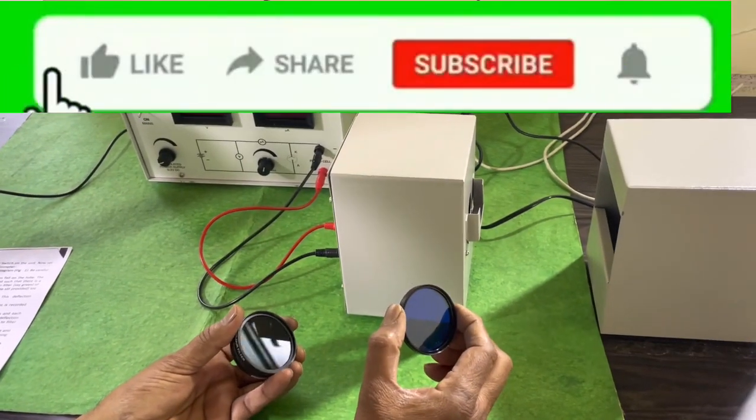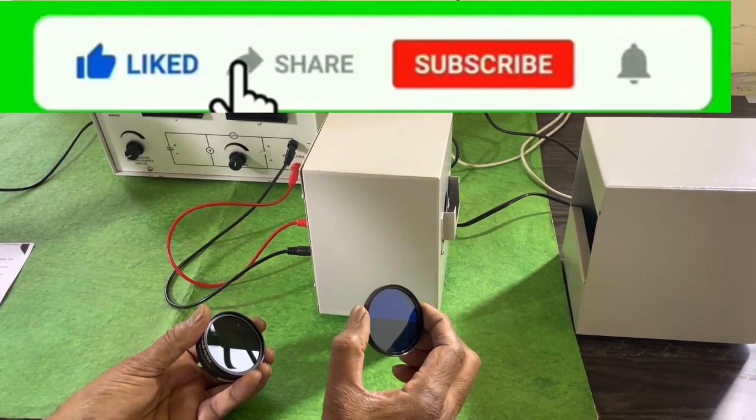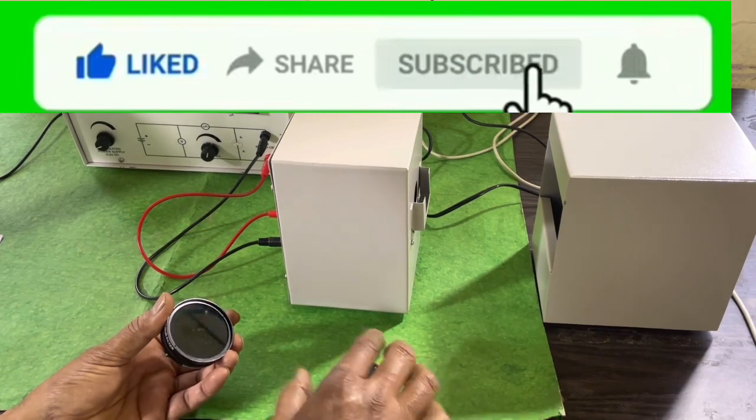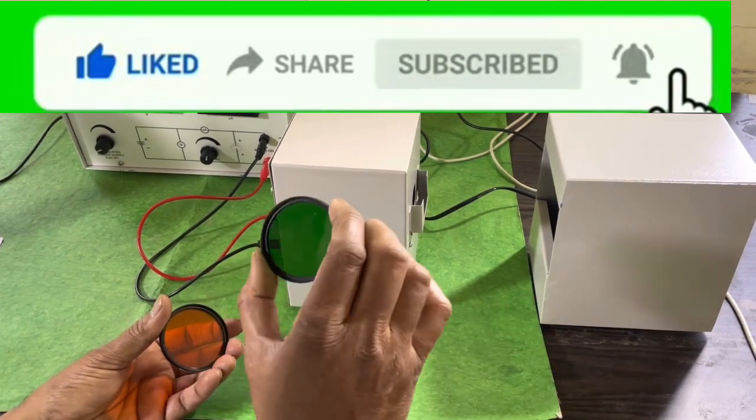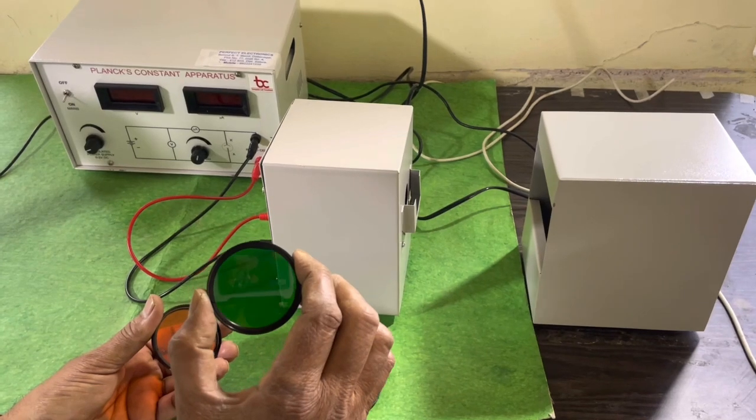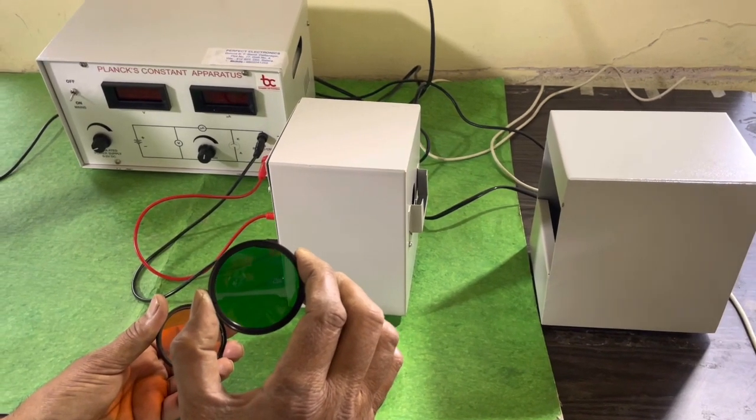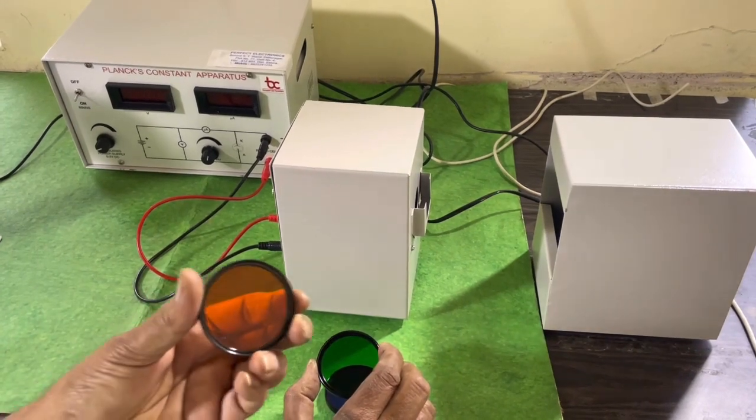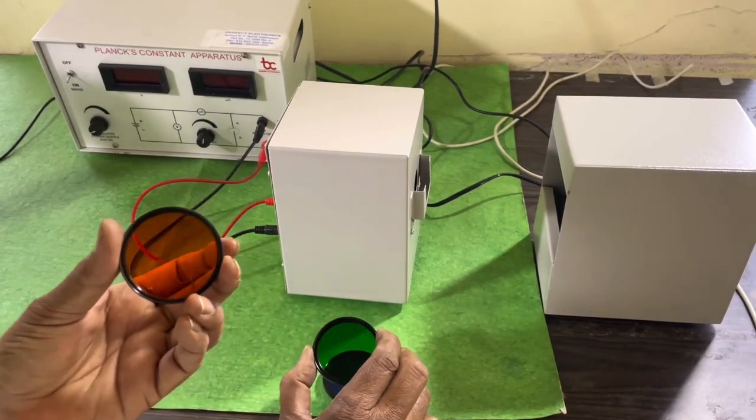Here there are three filters. Blue filter whose wavelength is 4900 × 10⁻¹⁰ meters, and the second filter is green filter whose wavelength is 5200 × 10⁻¹⁰ meters.